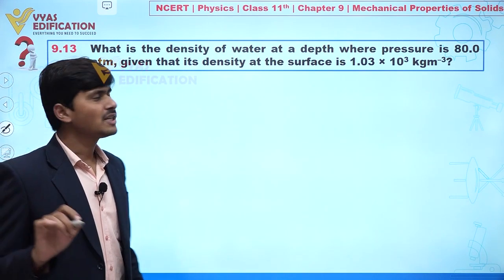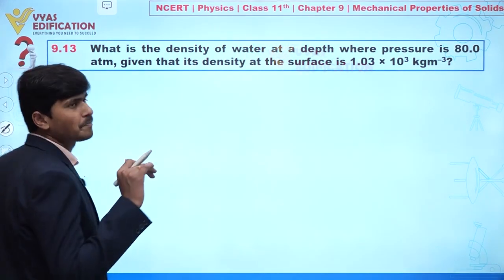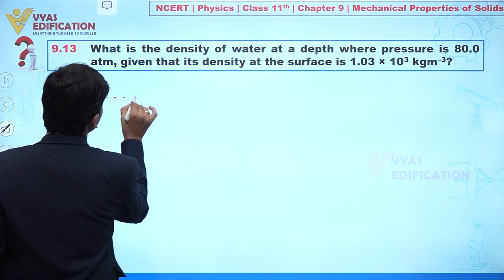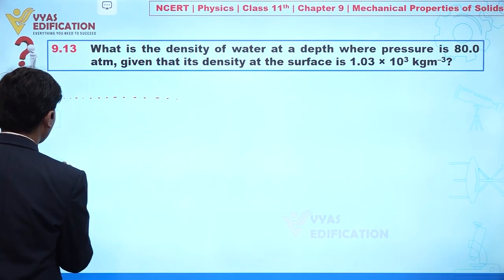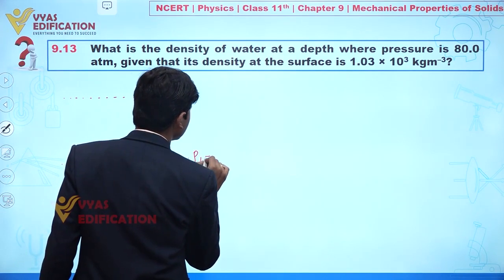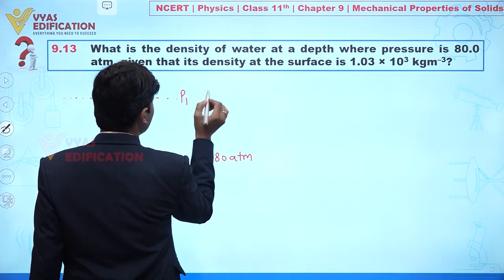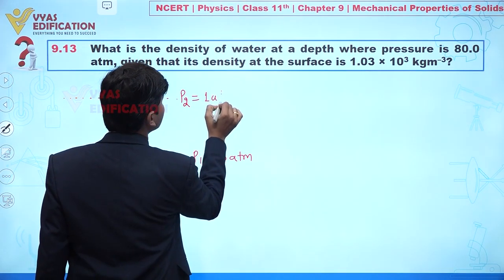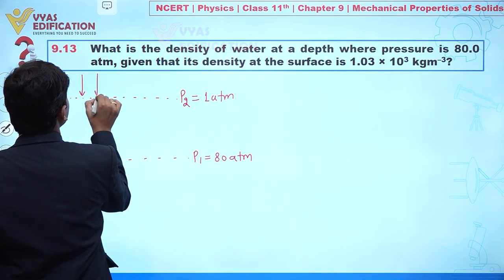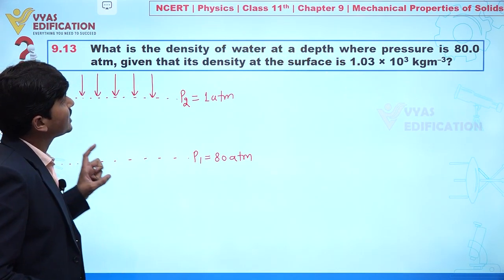Our objective is to calculate the density of water at a depth where pressure is 80 atm. Let's suppose this is the surface of water. At a deeper point, pressure p₁ is given as 80 atm, and at the surface we have 1 atmosphere, because the atmosphere is exerting pressure on the surface.